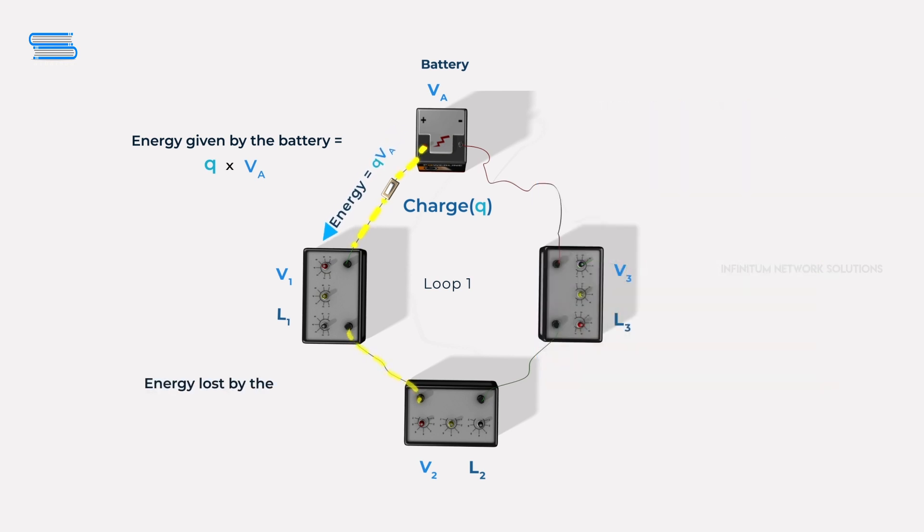This means that the energy lost while the charge is going through L1 is going to be equal to Q times V1. Similarly, the other energies lost are Q times V2 and Q times V3.